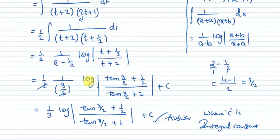So 1 by 2 times 1 by 3 by 2 log. Since t equals tan x by 2, this becomes 1 by 3 log mod tan x by 2 plus 1 by 2 whole divided by tan x by 2 plus 2 plus c, where c is the integral constant.